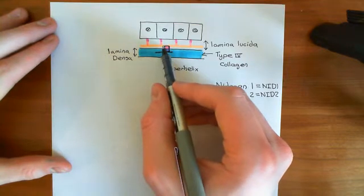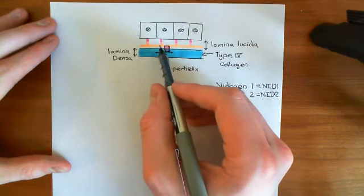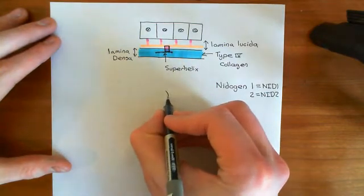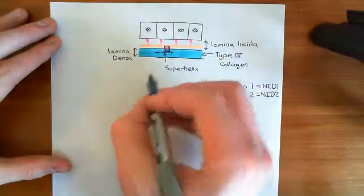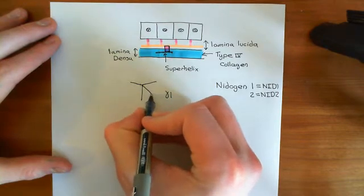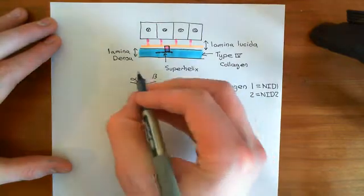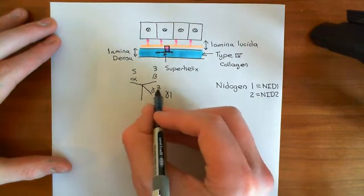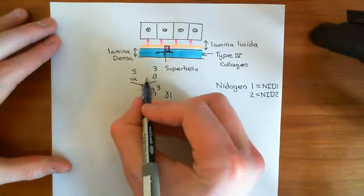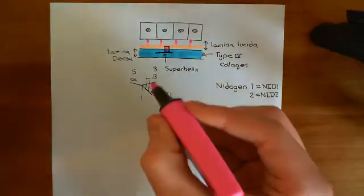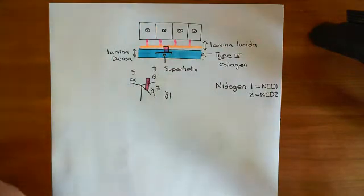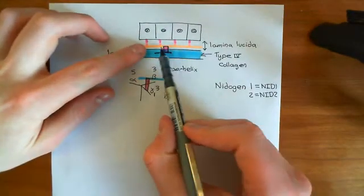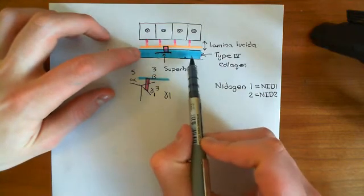You'll recall I said I'd come back to why it was important that heterotrimeric laminins usually contain a gamma 1 laminin — well, this is it. The nidogen proteins bind to the gamma 1 laminin. Laminins consist of three separate proteins: one alpha, one beta, one gamma. Usually a laminin will have gamma 1 as its gamma laminin, and it is the gamma 1 laminin that the nidogen proteins bind to. They also bind to the collagen type 4 molecule, and that's how they hold the laminin heads to the collagen layer in the lamina densa, holding the basement membrane together.